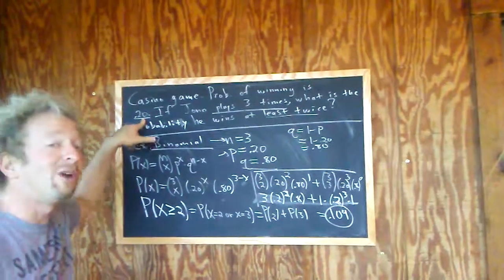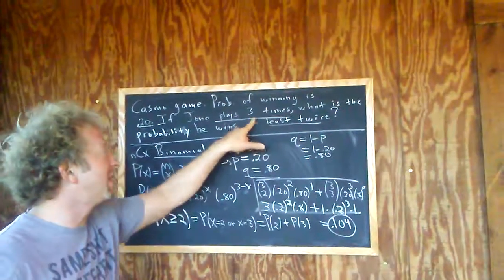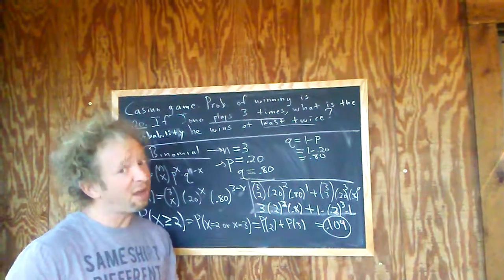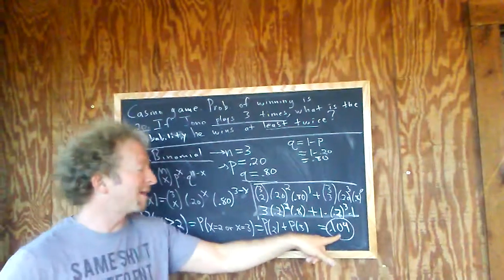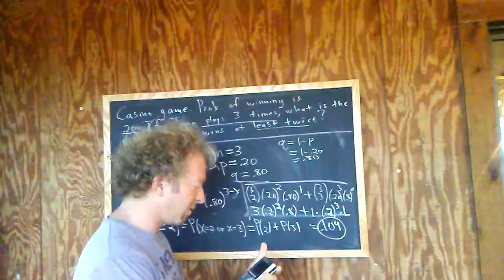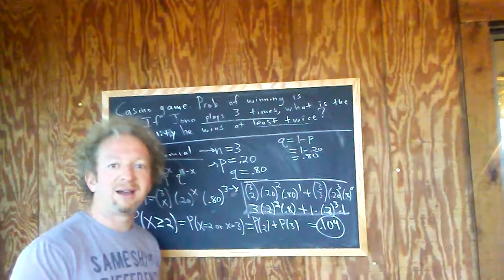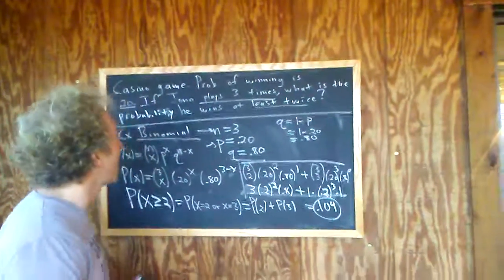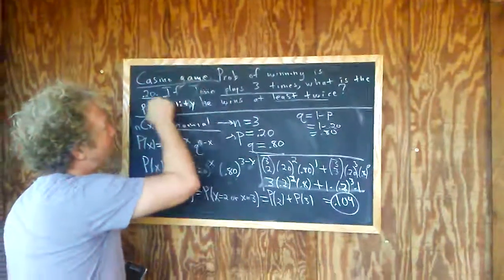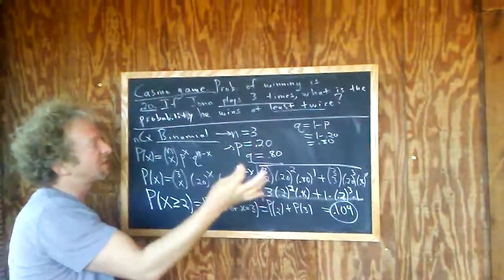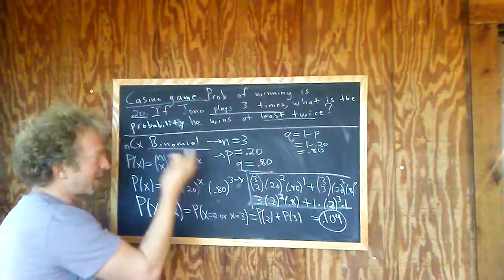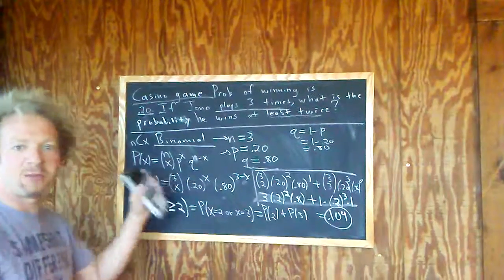The probability of him winning is only 20%. So the probability of him winning at least twice, he plays three times, that's pretty good for such a small probability. So about a 10% chance, 0.104, that he wins at least twice. So when you have a problem and there's two possible outcomes, and they give you the probability of success, it's binomial. And you just use the formula. So I hope that helps. That's it.